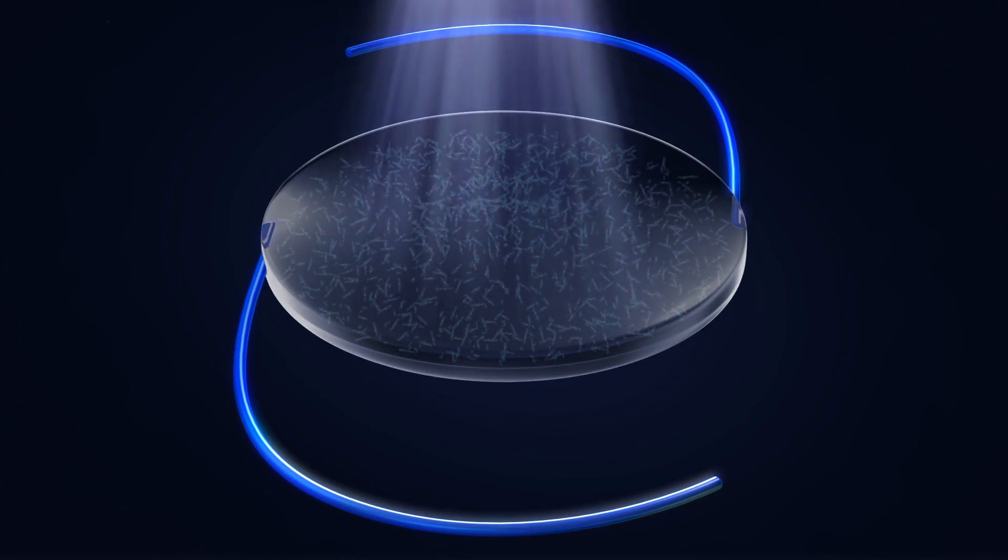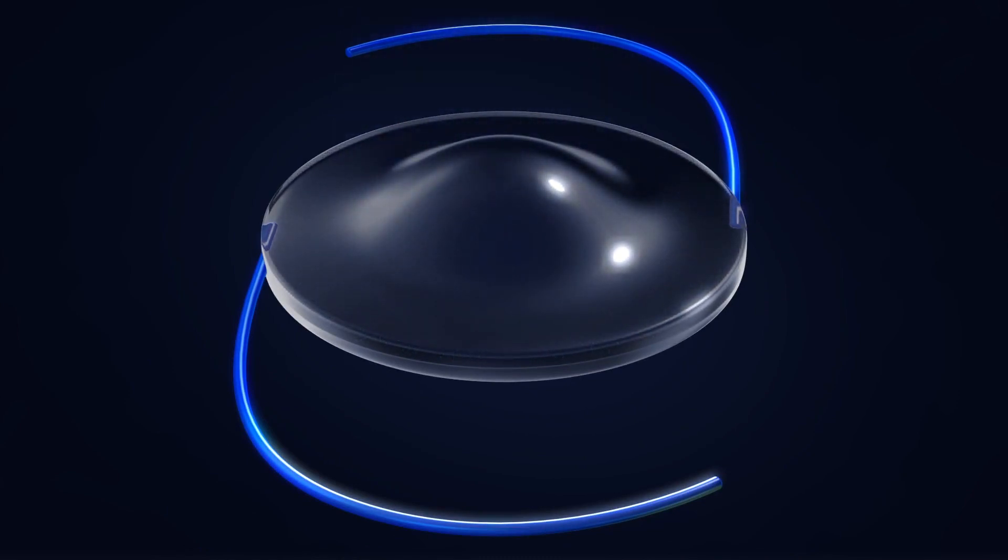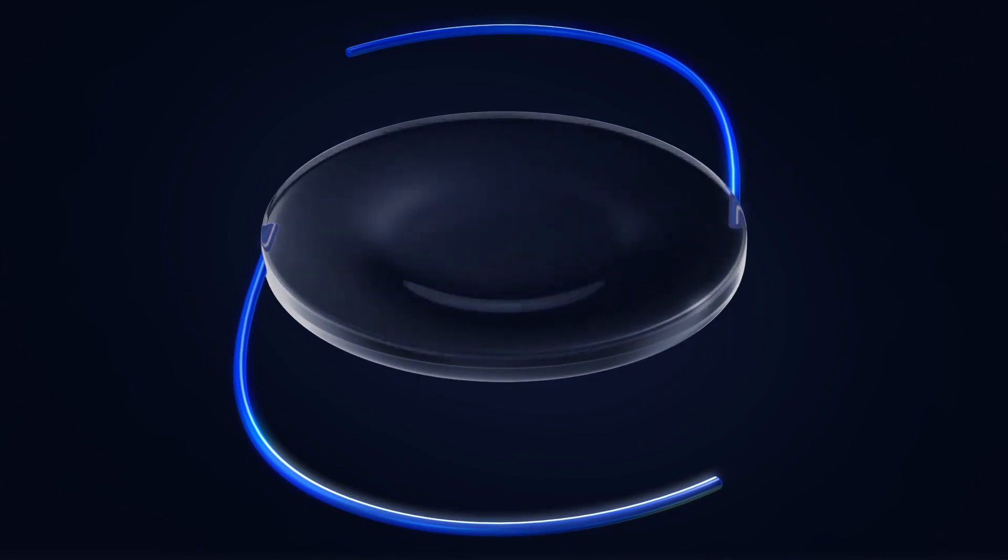The remaining unreacted macromers physically diffuse into the exposed area, causing a highly predictable change in the shape of the lens and a refractive power change of the RxLAL.